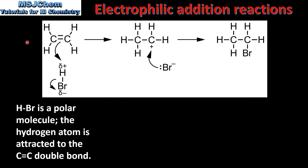Next we look at the mechanism of the reaction. Because of the difference in electronegativity between hydrogen and bromine, hydrogen bromide is a polar molecule. The bromine atom has a negative dipole and the hydrogen atom has a positive dipole. Because of the positive dipole on the hydrogen atom, it's attracted to the high electron density of the carbon to carbon double bond.